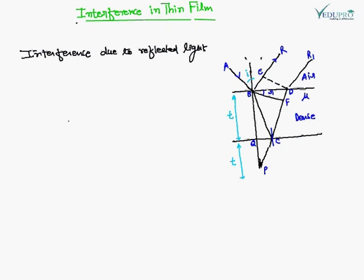Our next topic is interference in thin film. This heading is generally asked in examinations - discuss the phenomenon of interference of light due to thin film and find the condition of maxima and minima, so that the interference patterns of reflected and transmitted monochromatic light are obtained. When the film is exposed to white light and seen in reflected light, different colors are seen in the film.